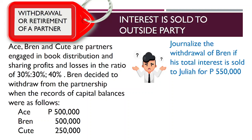Please take note that we have two parties here: the first party is the selling party, which is the withdrawing partner Brand; and the second party is the new partner named Julia. As discussed previously, the transaction between the selling and buying partner is personal in nature. Hence, the journal entry is to debit the capital account of the selling partner and credit the account of the buying partner.